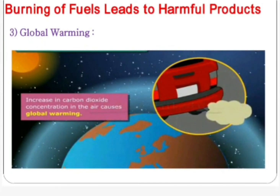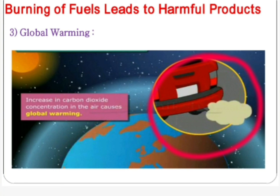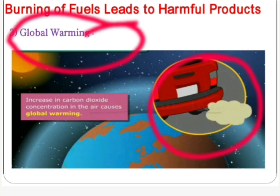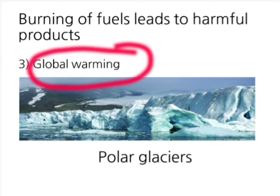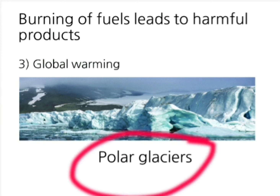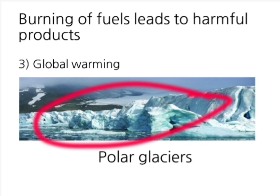Third, global warming. Combustion of most fuels releases carbon dioxide into the environment, and the increased concentration of carbon dioxide in the air causes global warming. Because of global warming, polar glaciers are melting, leading to a rise in sea level and causing floods in coastal areas. Low-lying coastal areas may even be permanently submerged under water.